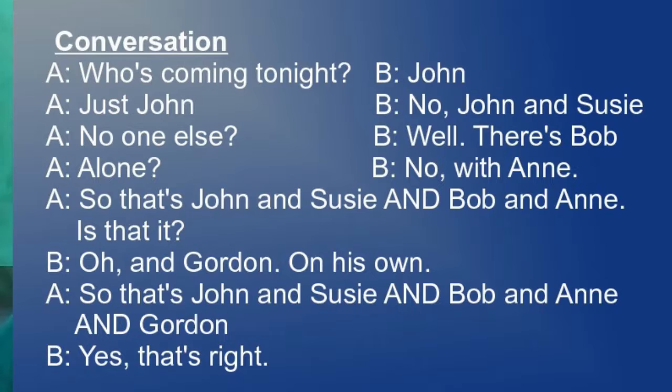A: Is that it? B: And Gordon on his own? A: So, that's John and Susie? And Bob and Anne? And Gordon? B: Yes, that's right. Notice that in addition to using pause and low pitch, speaker A also reduces 'and' to 'er' for couples together. This also helps the listener understand who is with who.